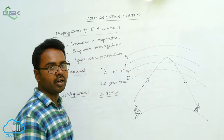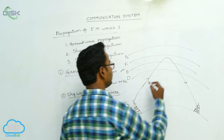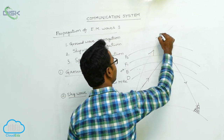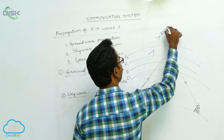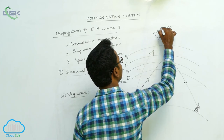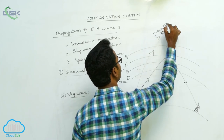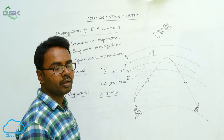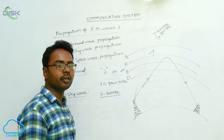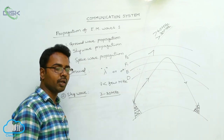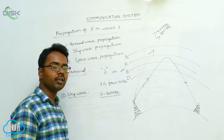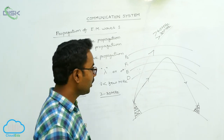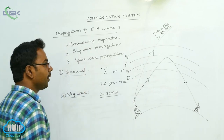For frequencies greater than 30 megahertz, signals penetrate through the atmosphere and cannot be reflected by the ionosphere. In this way, sky wave propagation is achieved because of ionospheric reflection, which is similar to total internal reflection as discussed in the optics lesson. Next, we discuss space wave propagation.